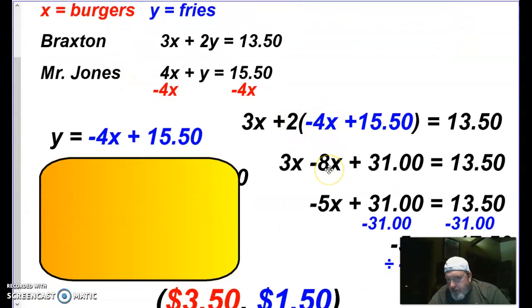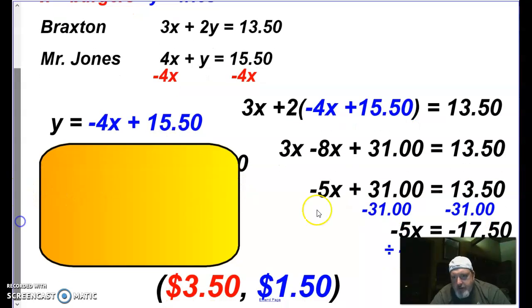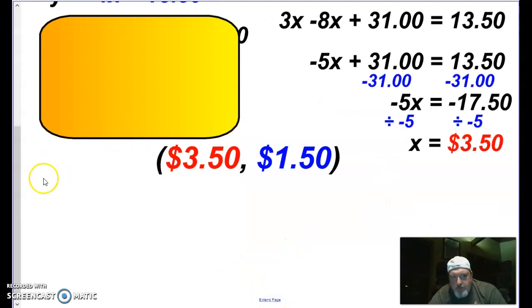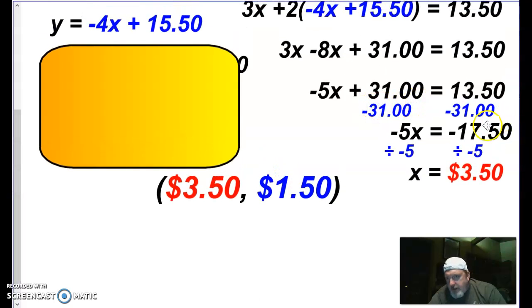I can combine these two X terms, so that's negative 5X plus 31 equals $13.50. I'm going to subtract $31. And so when I subtract my $31, I'm going to get down to negative $17.50. And that's okay, because we're going to divide by a negative. So we divide by a negative 5, and we find X is $3.50. So we now know that a burger costs $3.50.